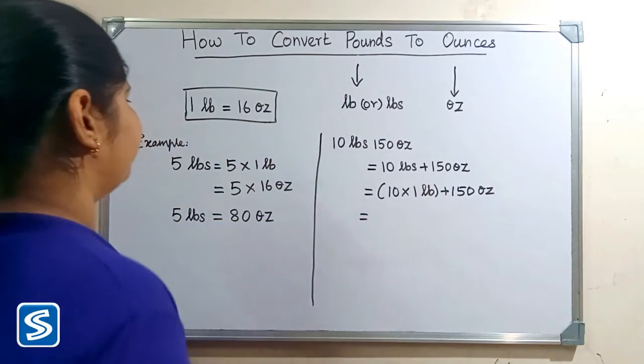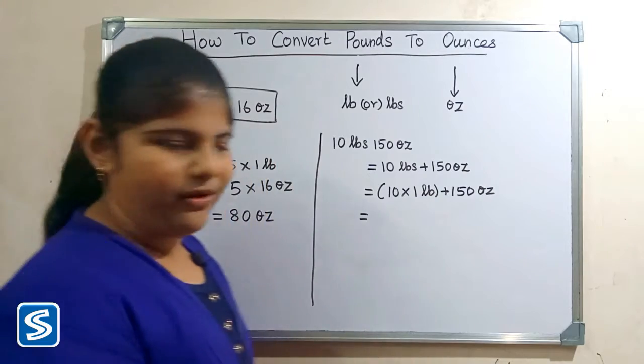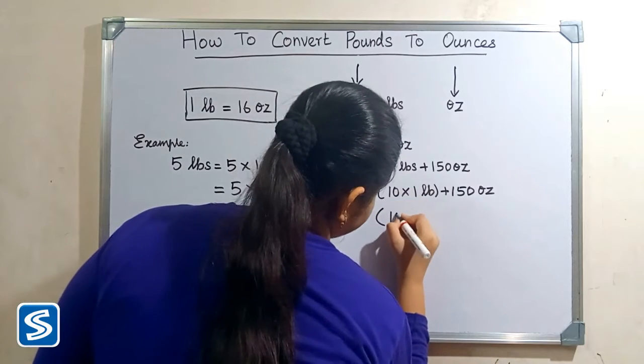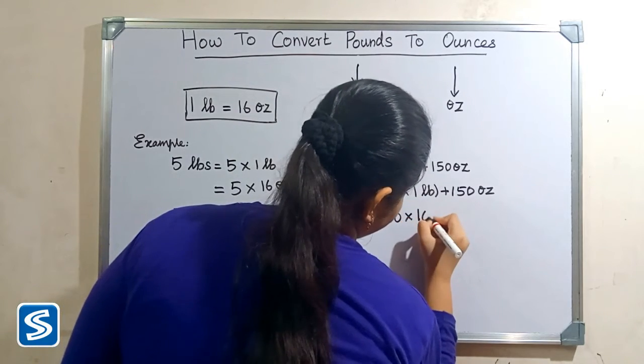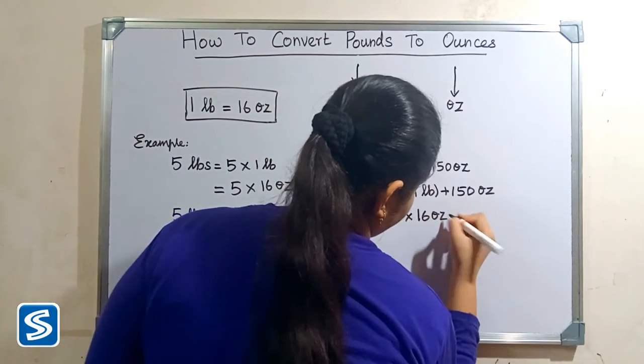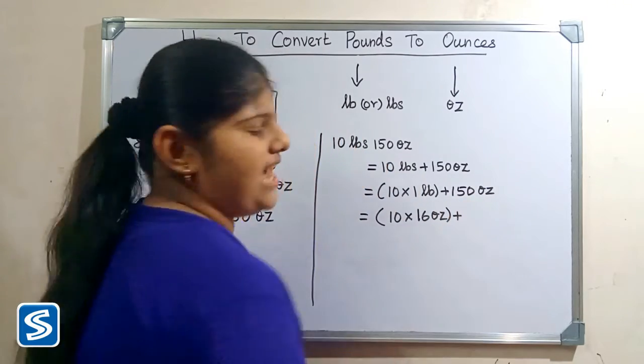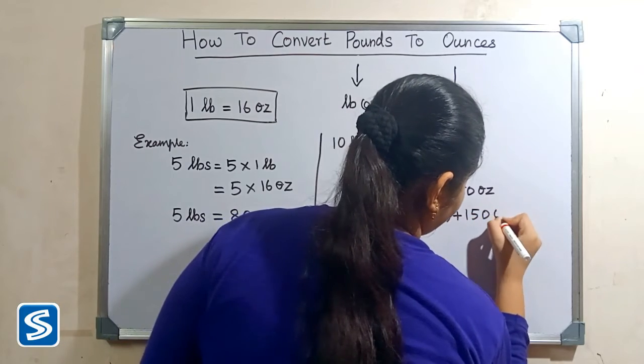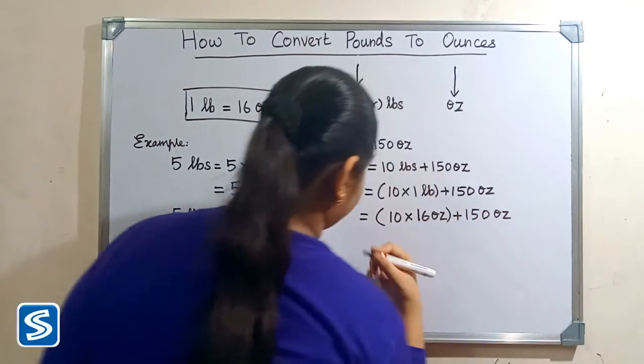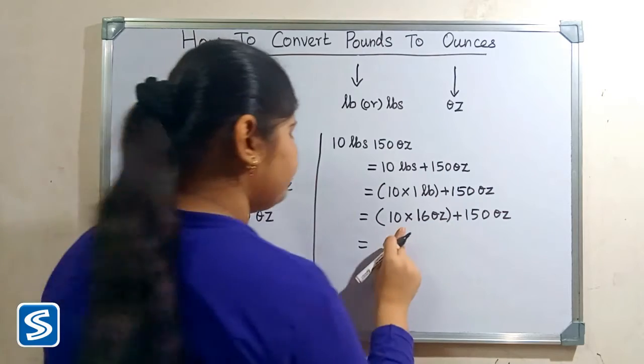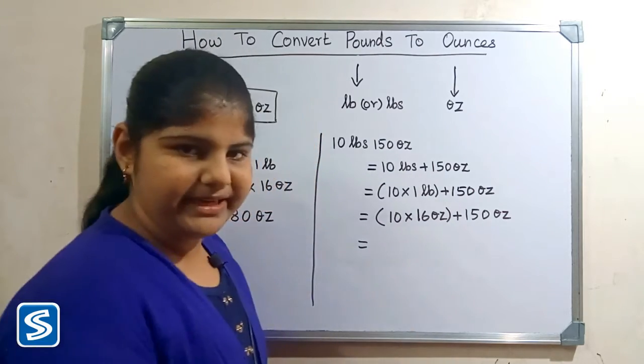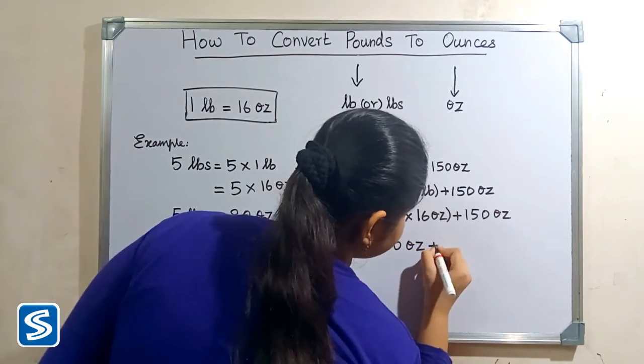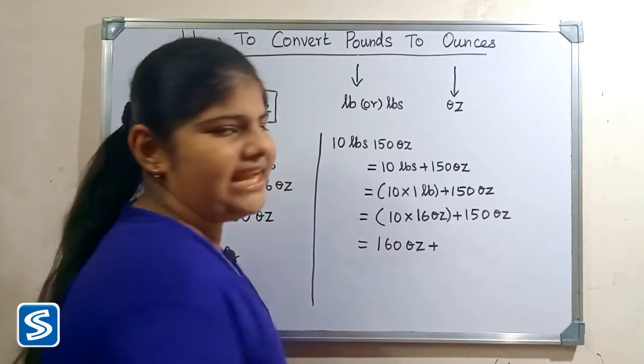Now we have to substitute 16 ounces in the place of 1 pound, so 10 multiply 16 ounces plus 150 ounces. 10 multiply 16 ounces will be 160 ounces plus 150 ounces.